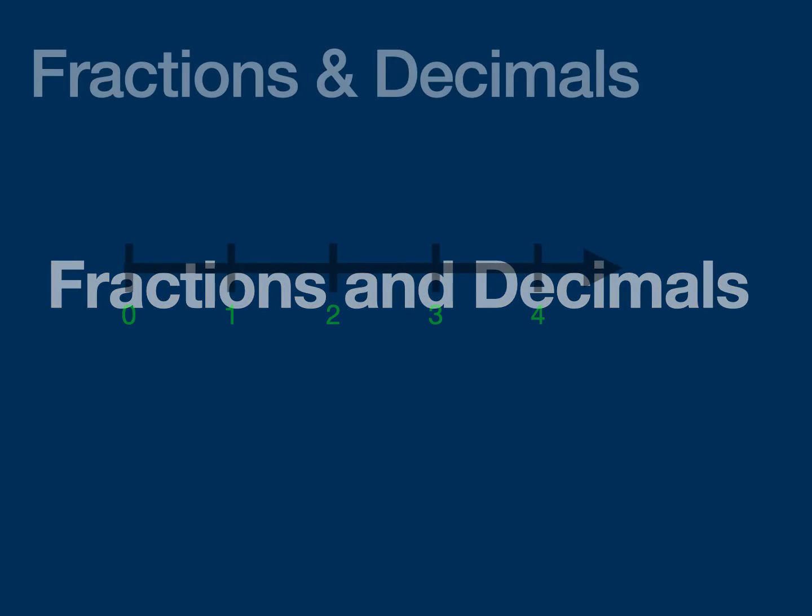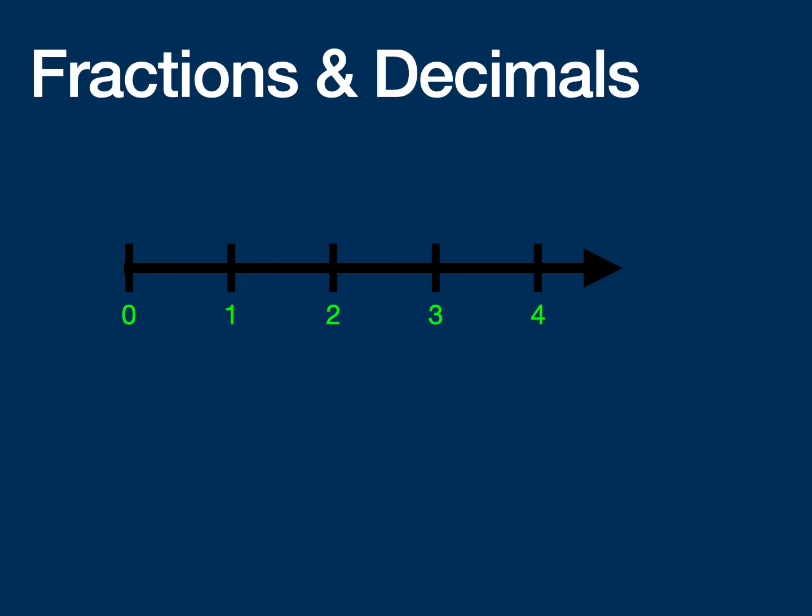Let's take a look at this number line going from zero to four and so on. A lot of times when we talk about fractions and decimals, it has to do with this space between zero and one. It's a way for us to record amounts that are less than a whole number. Now fractions and decimals can of course go past one, but a lot of times they kind of live in this sweet spot.